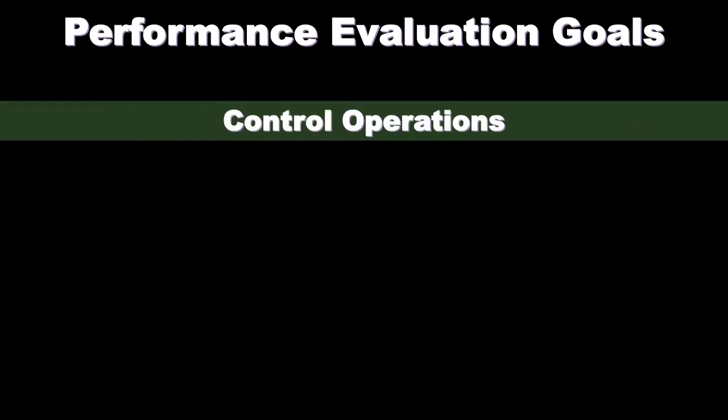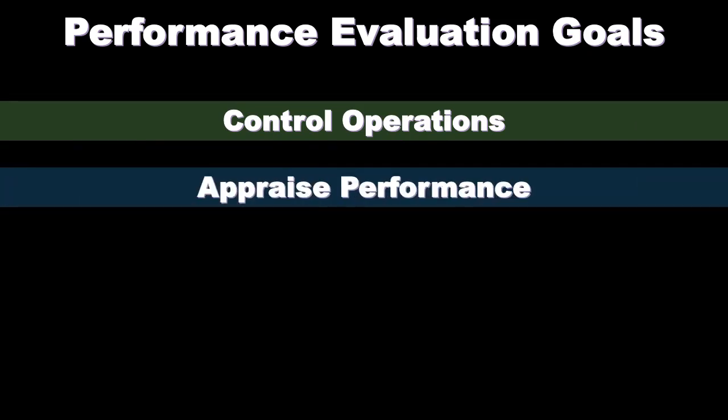The performance evaluation goals — what are the objectives of evaluating the performance of different segments? We want to be able to control the operations of those sections, appraise performance, and hold managers accountable. We have managers involved in different departments and different segments within the organization, and accountability is one of the major objectives. This will hopefully increase performance by knowing who is responsible for specific goals and objectives.